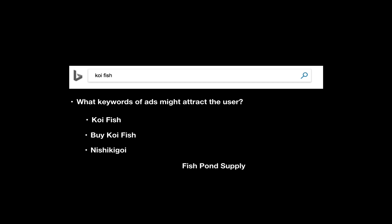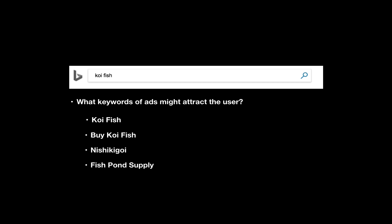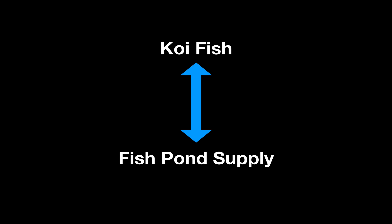Now the very tricky one is 'fish pond supply.' You would say yes, it's very likely — it's a keyword for ads that might attract the user. But how do you match those two together? Both have 'fish,' so they seem related, but this isn't very precise: if someone searched for 'fish,' they might be more interested in seafood rather than fish pond supply. So matching the query to a keyword is a challenging task.